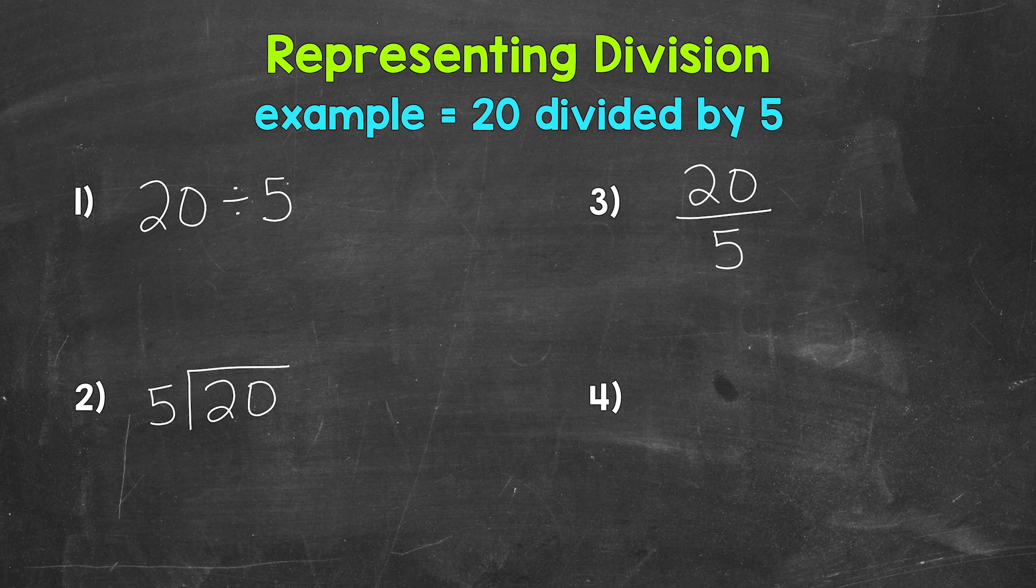The number that is being divided, the dividend, goes on top. It will be the numerator. Then whatever we are dividing by, the divisor, that goes below. It's going to be the denominator. So we have the numerator divided by the denominator.